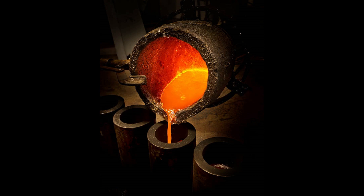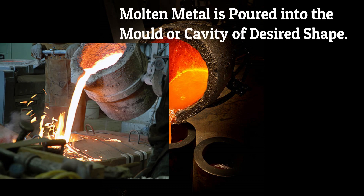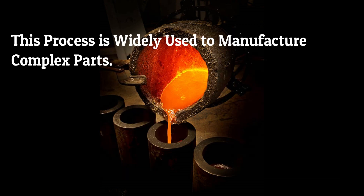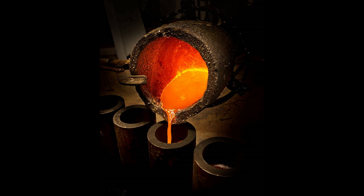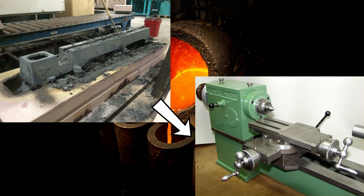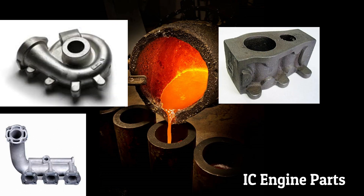Casting is defined as a manufacturing process in which molten metal is poured into a mold or a cavity of desired shape, and allowed to solidify which forms a predefined shape. This process is widely used to manufacture complex parts which cannot be made by other processes. All major parts like bed of lathe machine, milling machine bed, IC engine components etc. are made by this process.